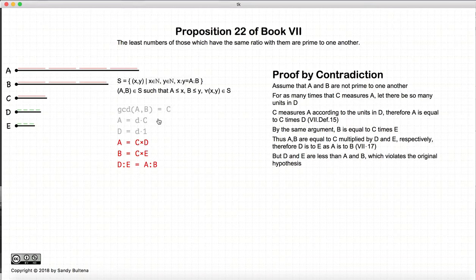So there is no greatest common divisor C that is not equal to 1. So therefore, the greatest common divisor of A and B is equal to 1. And that satisfies our proof.